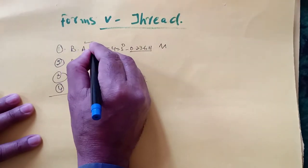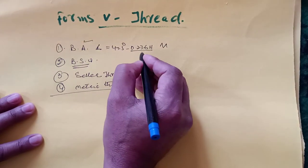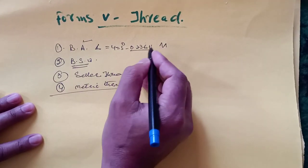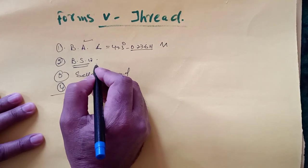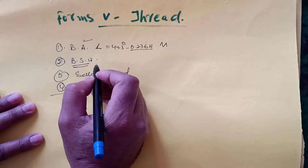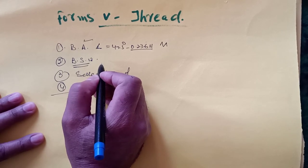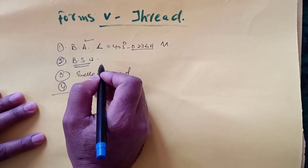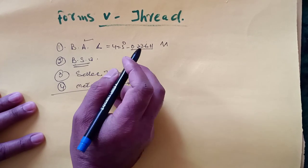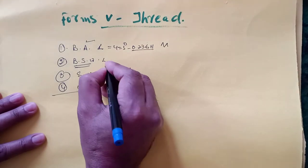In case of BSW thread, there is only difference of angle and difference of this roundness at crest and root. BSW means British Standard Whitworth thread. This form of thread is used as a standard thread in Britain. It is a modified form of V thread having angle of 55 degrees.